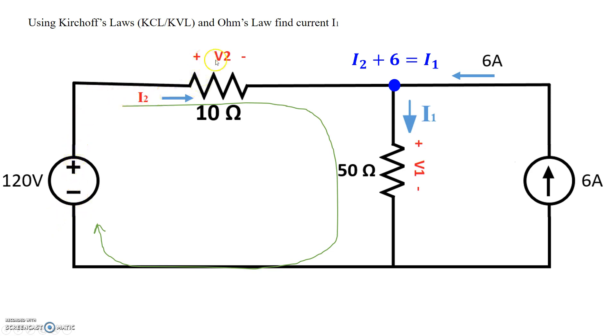the first sign I encounter is minus 120. I encounter plus V2, and then I encounter plus V1, and then I get back to where I started. So minus 120 plus V2 plus V1 should be equal to 0. Now I can rearrange that as V2 plus V1 equals 120.